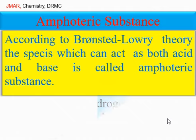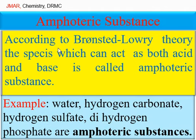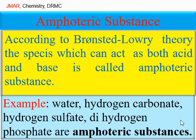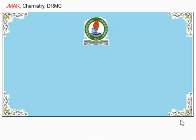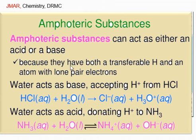Amphoteric substances. According to the Brønsted-Lowry theory, a species which can act as both an acid and a base is called an amphoteric substance. Examples include water, hydrogen carbonate ion, hydrogen sulfate ion, and dihydrogen phosphate ion. Amphoteric substances can act as either an acid or a base because they have both a transferable hydrogen and an atom with a lone pair of electrons.